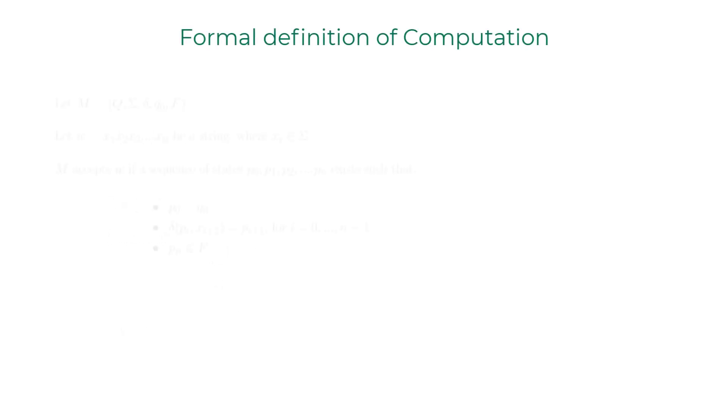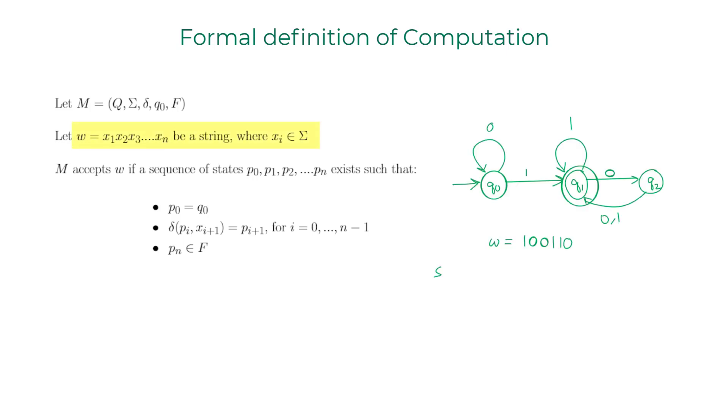Now let's move on to the next topic. It's the formal definition of computation. I'm going to resort to the DFA example that I've shown earlier to explain this to you. So I've written a word or a string right there: 100110. I'm not really sure if that string is going to end up in the accept state, but we'll try to see what's going to happen.